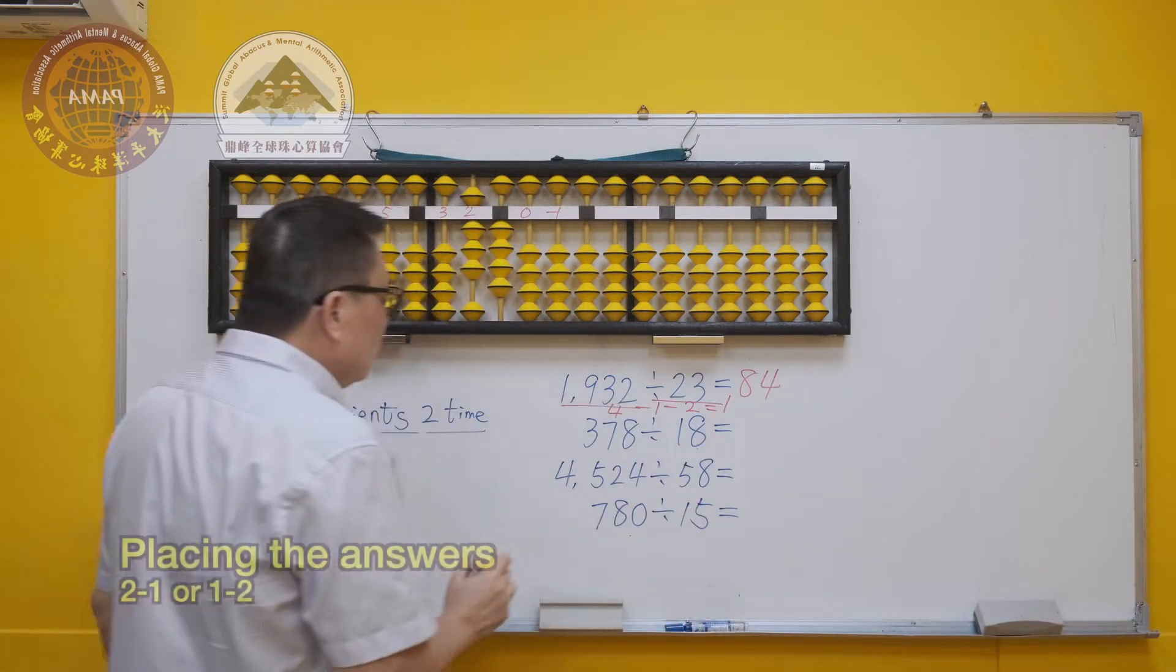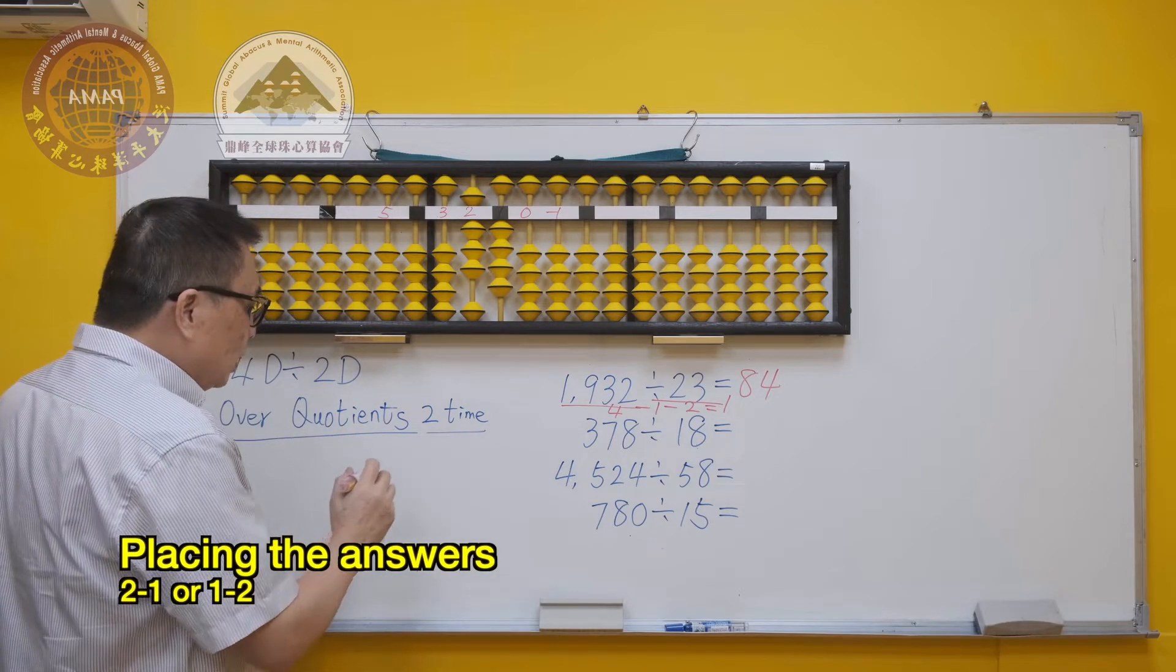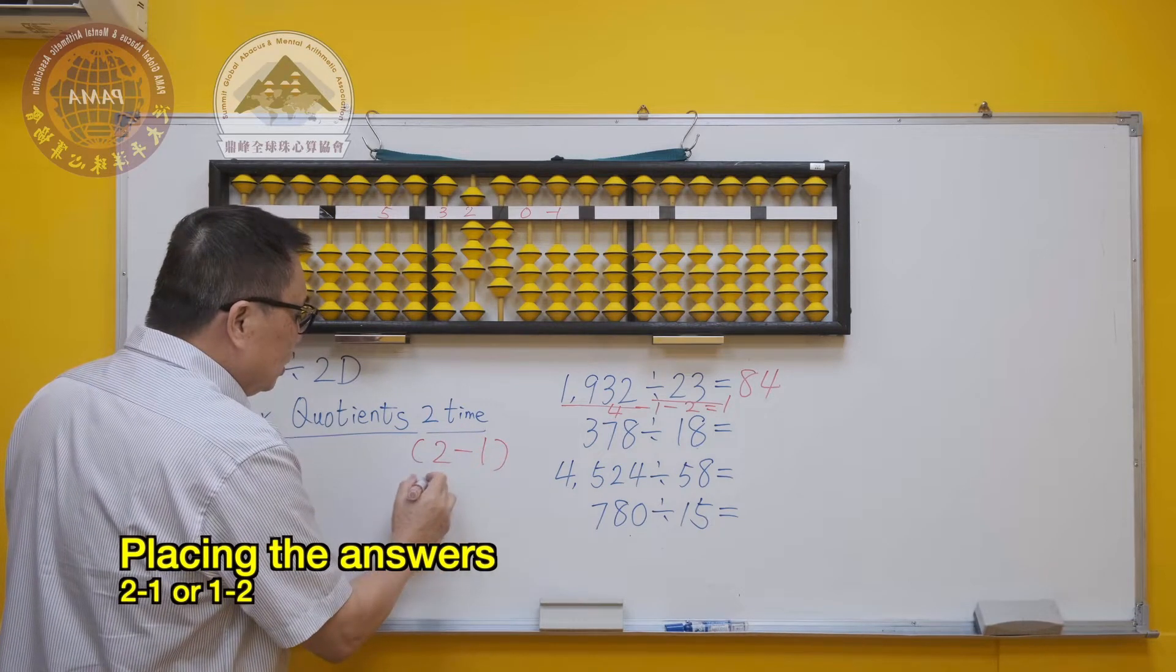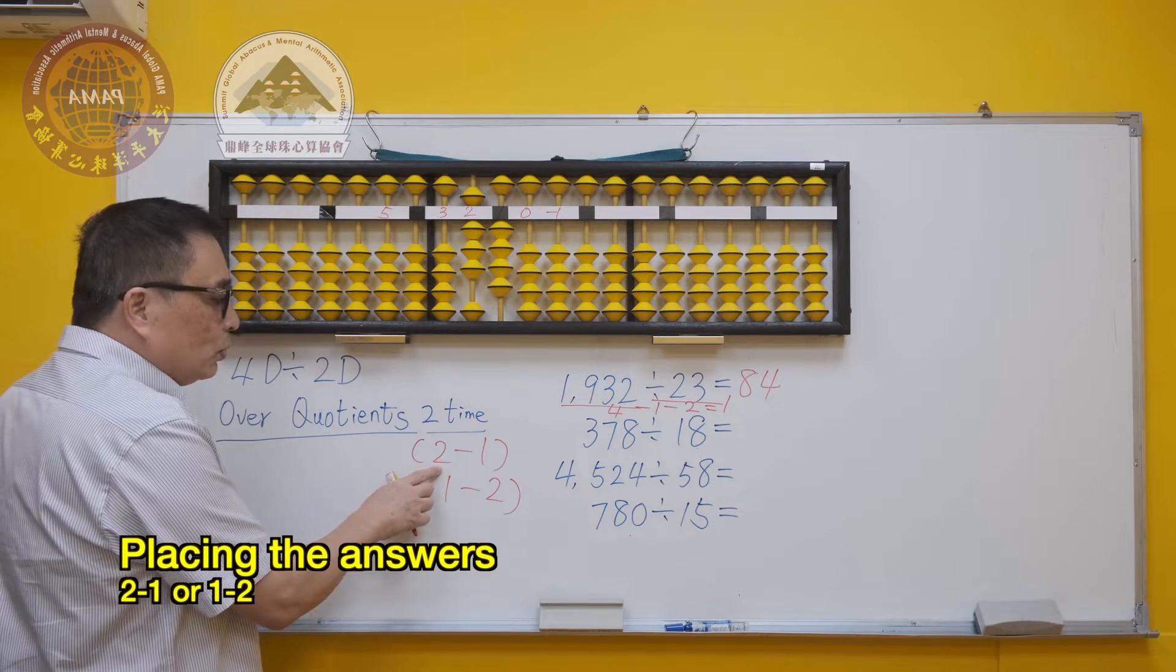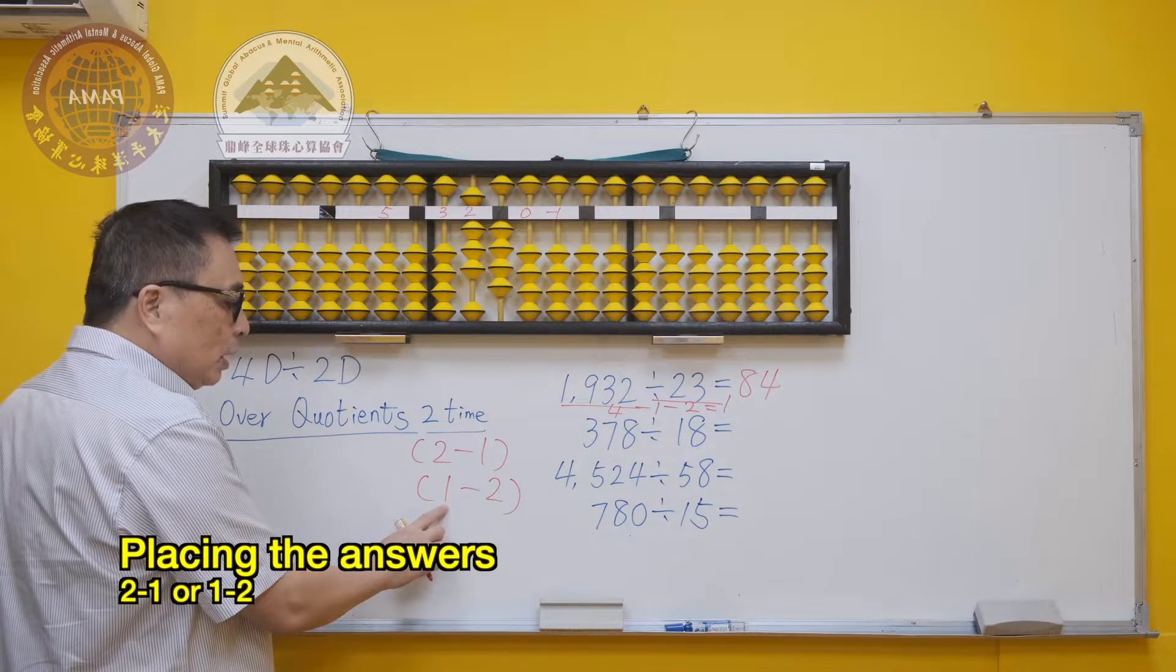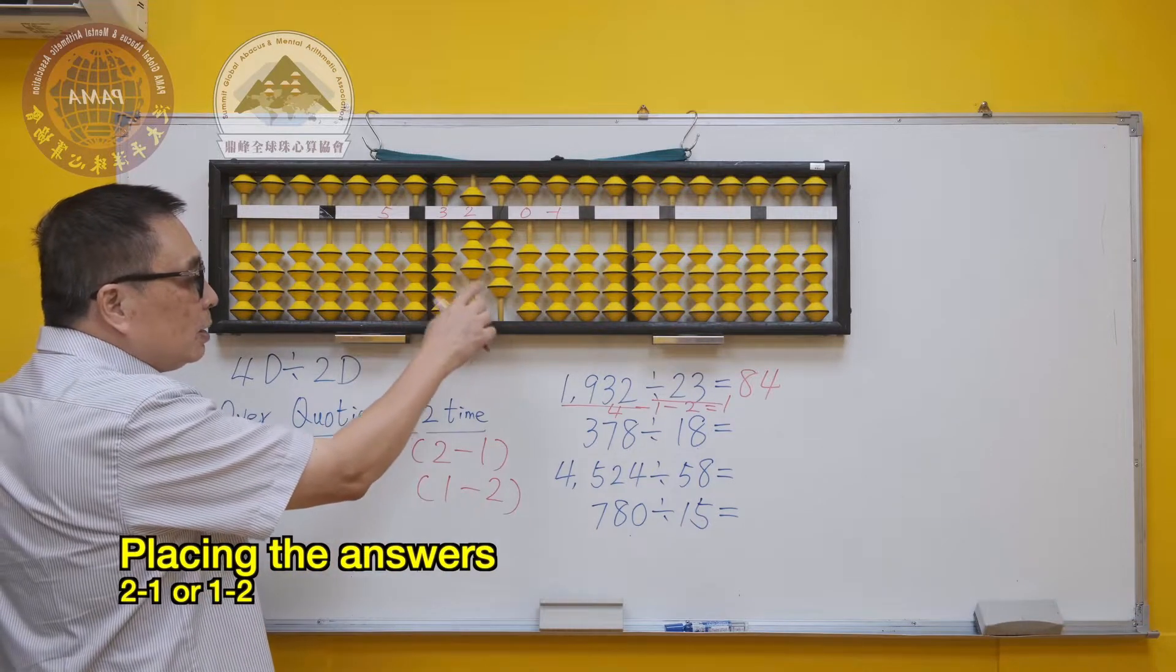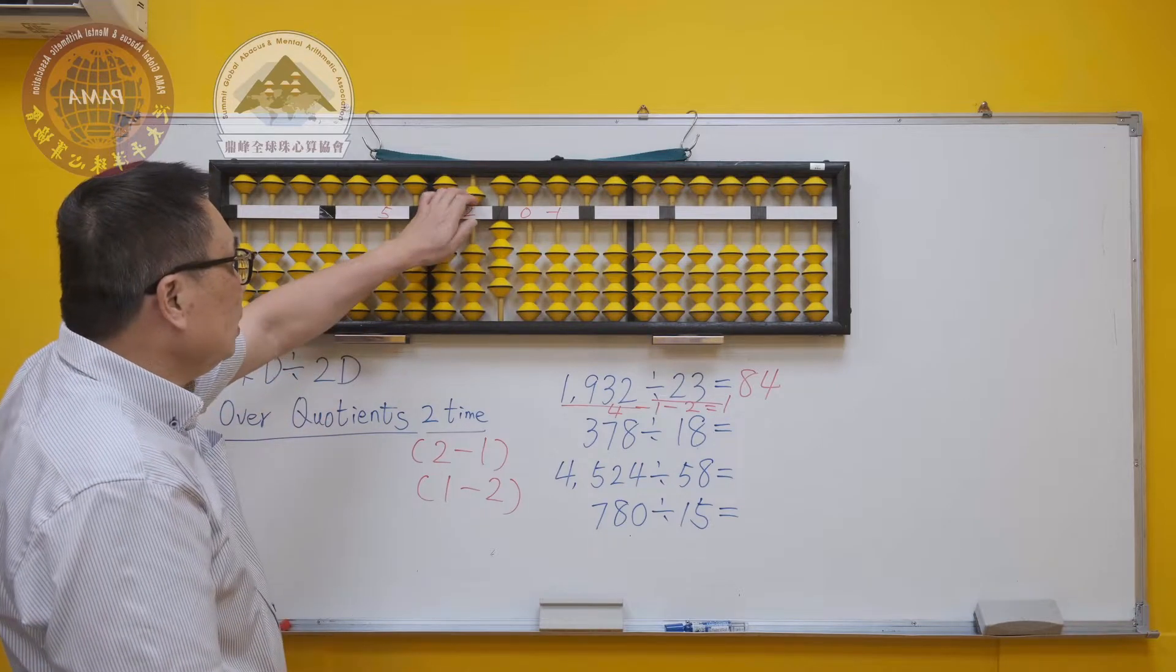As mentioned in the last unit, the position of placing the answer on the abacus has two situations: 2,1 and the other one is 1,2. When we are using two digits of the dividend, we place the answer on the first rod of the left. When we are using one digit to minus, we place the answer on the second rod of the left. I have shown both situations in the demonstrations.